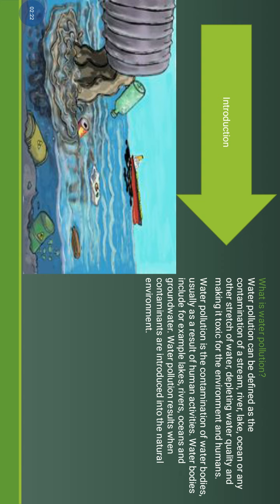Here is the introduction of water pollution. As you see in this video, we cover causes, effects, and what water pollution is. The definition of water pollution is the contamination of streams, rivers, lakes, oceans, and any other body of water, depleting water quality and making it toxic for the environment and humans. Water pollution is contamination of a water body, usually as a result of human activity.